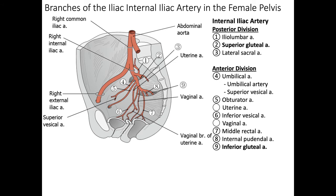Now we have the female pelvis. It's mostly the same except for a few key differences. There's no artery of the ductus deferens because females don't have one. They do have a uterus and a vagina, so we have a uterine artery and a vaginal artery in the anterior division, branching on either side of the inferior vesicle artery. In order to name the artery, you have to find what organ it is supplying first.